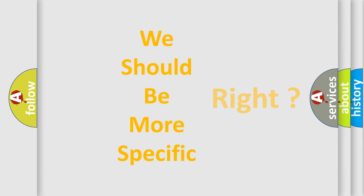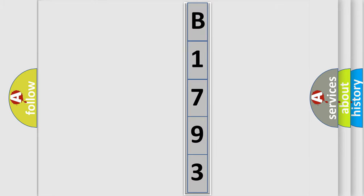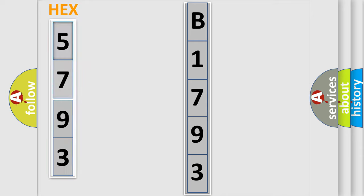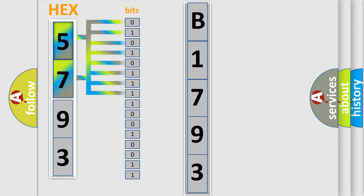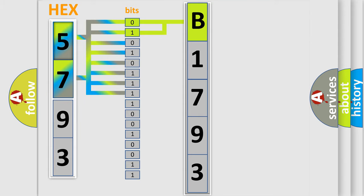The following demonstration will help you look into the world of software for car control units. The error code is split into two bytes consisting of 16 bits. One bit is the basic unit that each computer works with. The bit has two logical states: zero (low level) and one (high level). By combining the first two bits, the basic character of the error code is expressed.